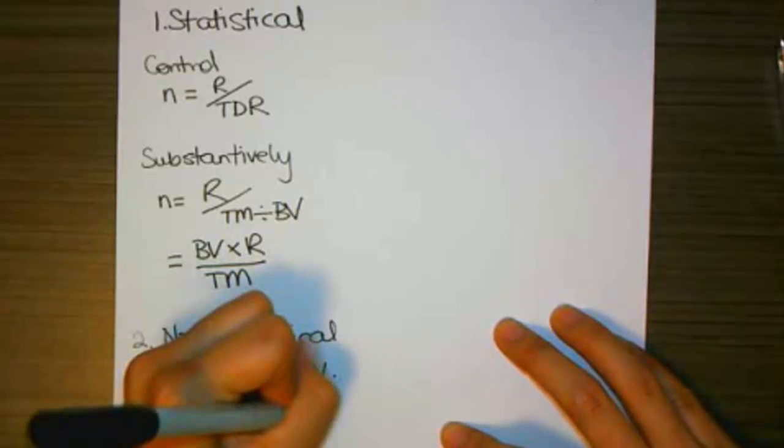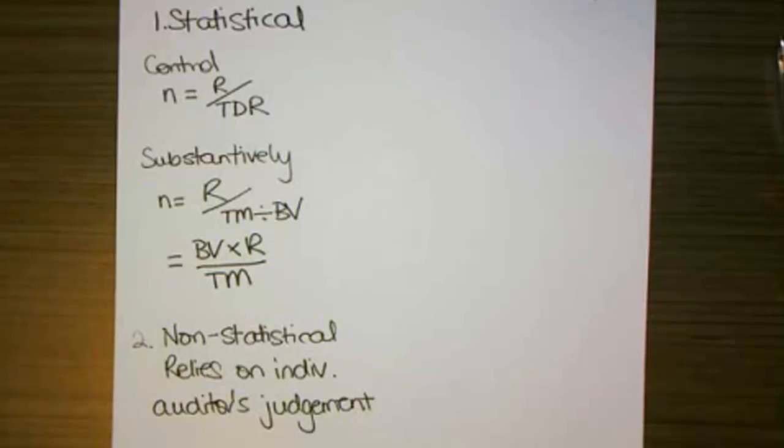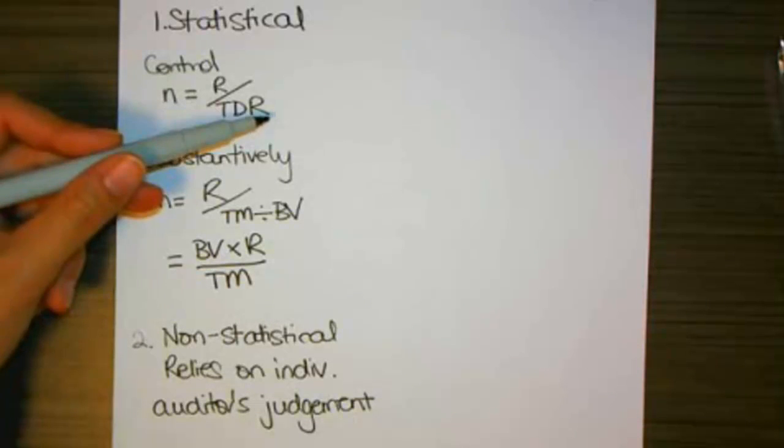So the senior or manager or partner decides we're going to test 20, 30, 50 transactions, and we don't use any sort of formula.